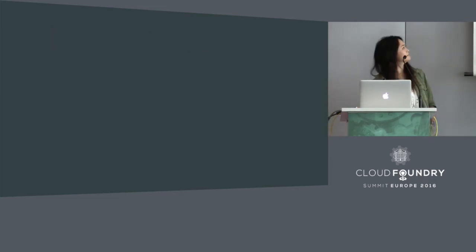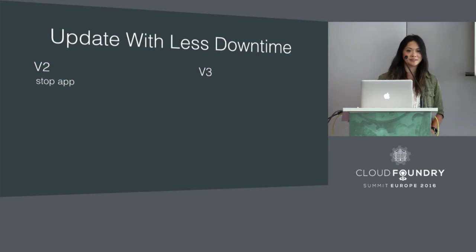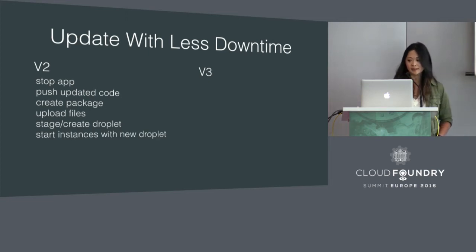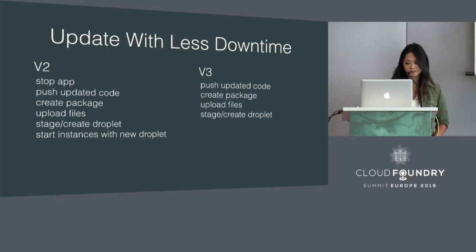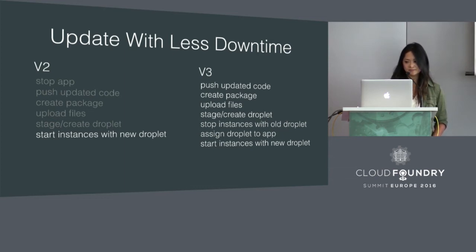So what if you want to update your app? In v2, we stop the app, push the updated code, create a package, upload the files, stage and create the droplet, stop the instance of the old droplet, assign the droplet to the app, and start instances with the new droplet. In v2, your app is down for almost all of this process. In v3, your app is only down when we're swapping the old with the new.